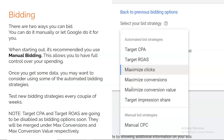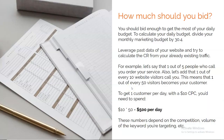How much should you bid? Bid enough to get the most out of your daily budget. To calculate your daily budget, divide your monthly marketing budget by 30.4. Leverage past data to estimate your conversion rate. For example, if one in five callers orders your service and one in ten website visitors calls you, then one in fifty visitors becomes a customer. At a $10 CPC, you'd need to spend $500 per day to get one customer. Your CPC will likely be higher — this is just a framework for your calculations.